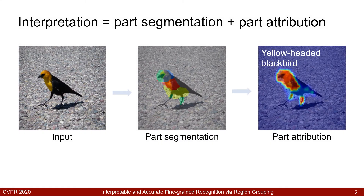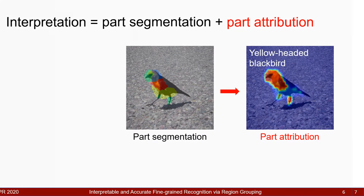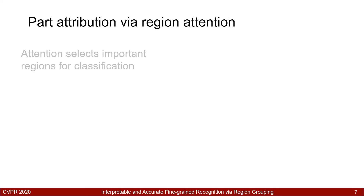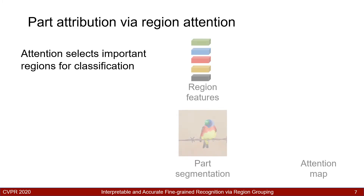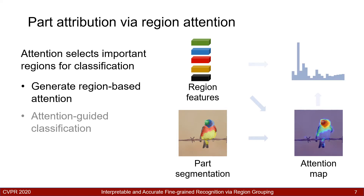Our next step is classification and part attribution. We use region-based attention to select important parts for classification. Our model learns to assign an attention value to each part region, producing a part attention map as shown on the bottom right. The attention values are used to weight the region features, followed by a classifier for fine-grained recognition.